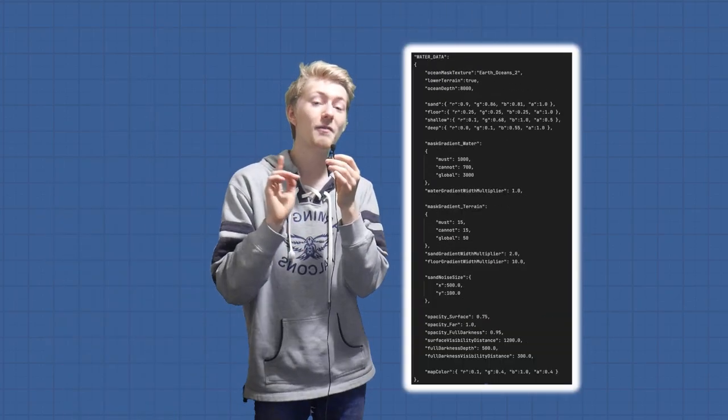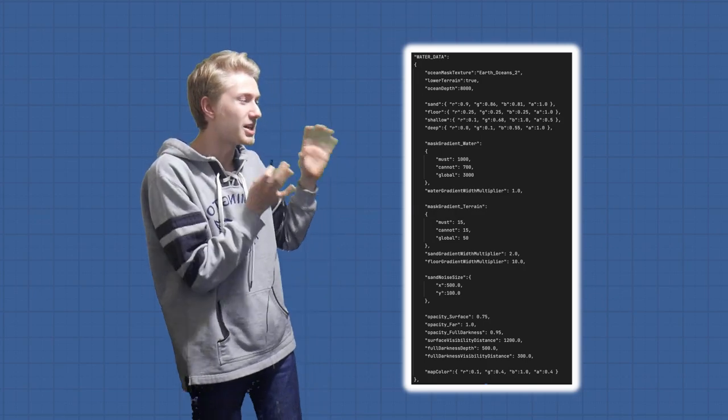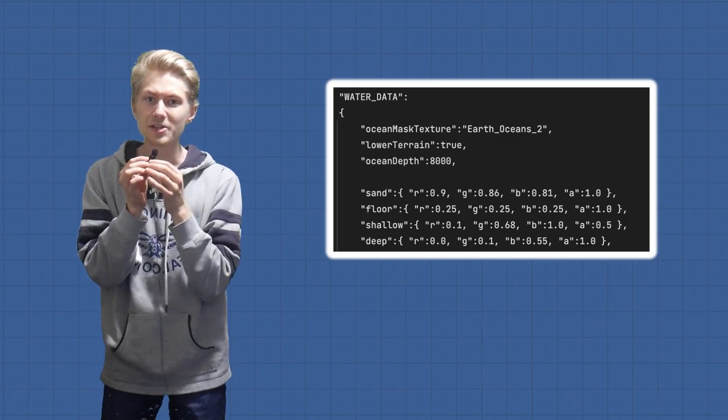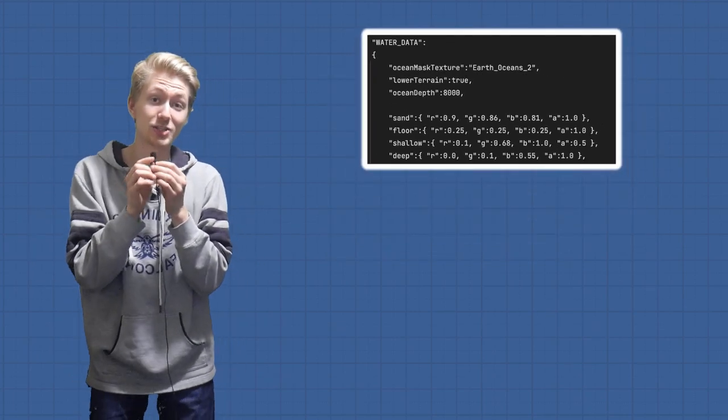Let's first talk about the screenshot of the file editing. Now, I know there's a lot here, but let's just shift our attention to the top part. Starting with the sand, the floor, shallow, and deep, these are color values that you can change in the file editing and it changes its corresponding locations on the planet.